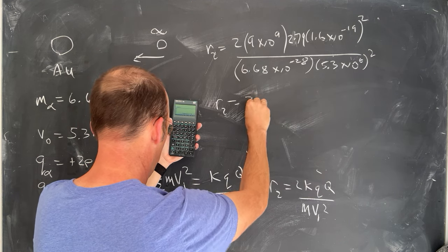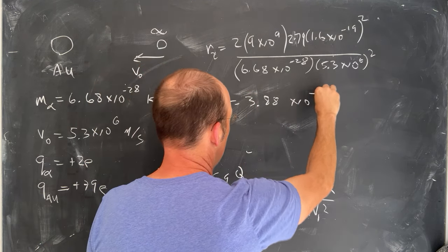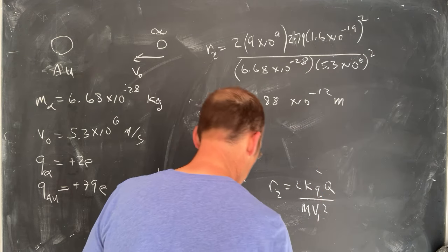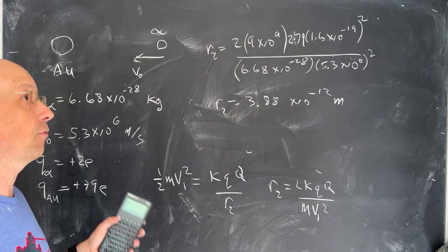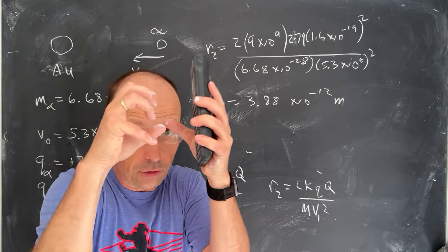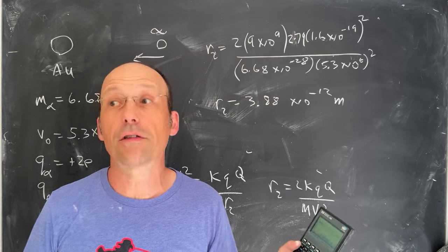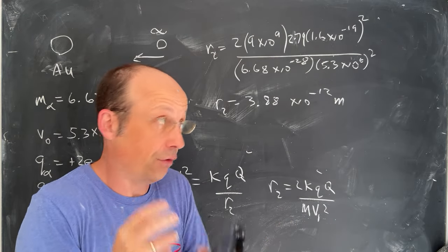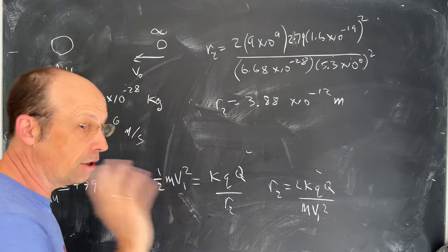And I get R2 is 3.88 times 10 to the negative 12 meters. And you know, this is an important calculation because a lot of times we need to calculate stuff like this to see if they get close enough for the strong nuclear force to take over and be stronger than the repulsive force. And then the two things confuse together. I don't know what the value is, but that's how you would do that.